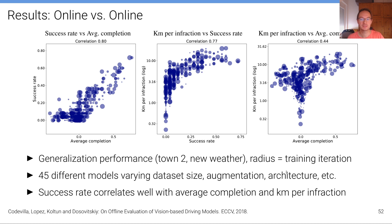And the performance that's measured here is the generalization performance to town 2 and new weather conditions. The radius of these circles indicates the training iteration. These models have been stopped after different training iterations in order to get more data points. So you can see the quality of the model as its radius or the duration as its radius.